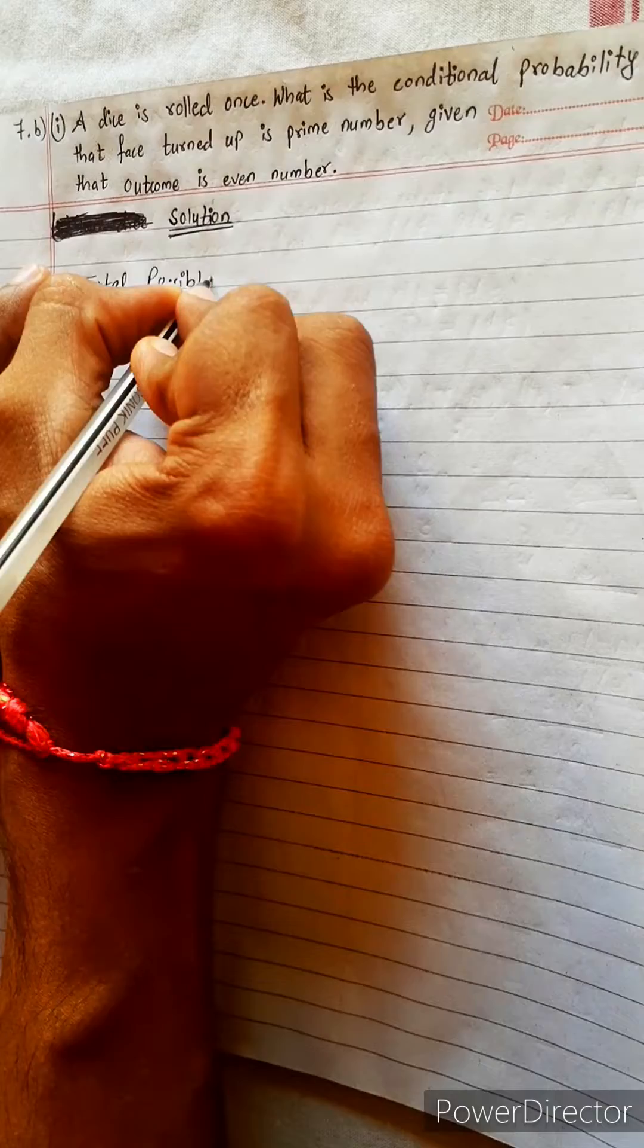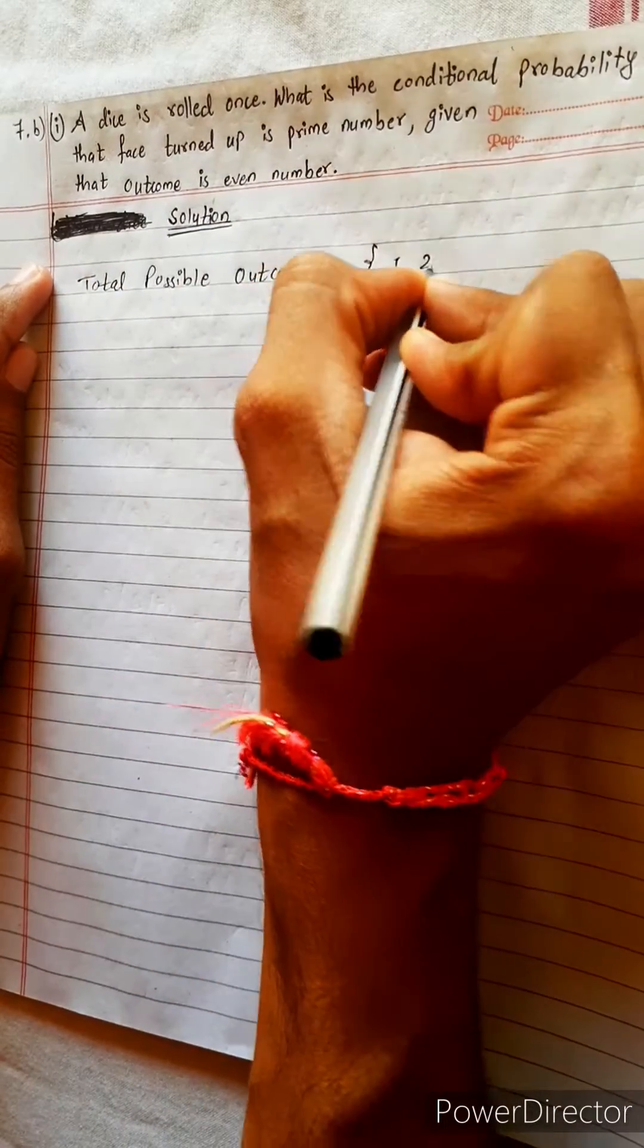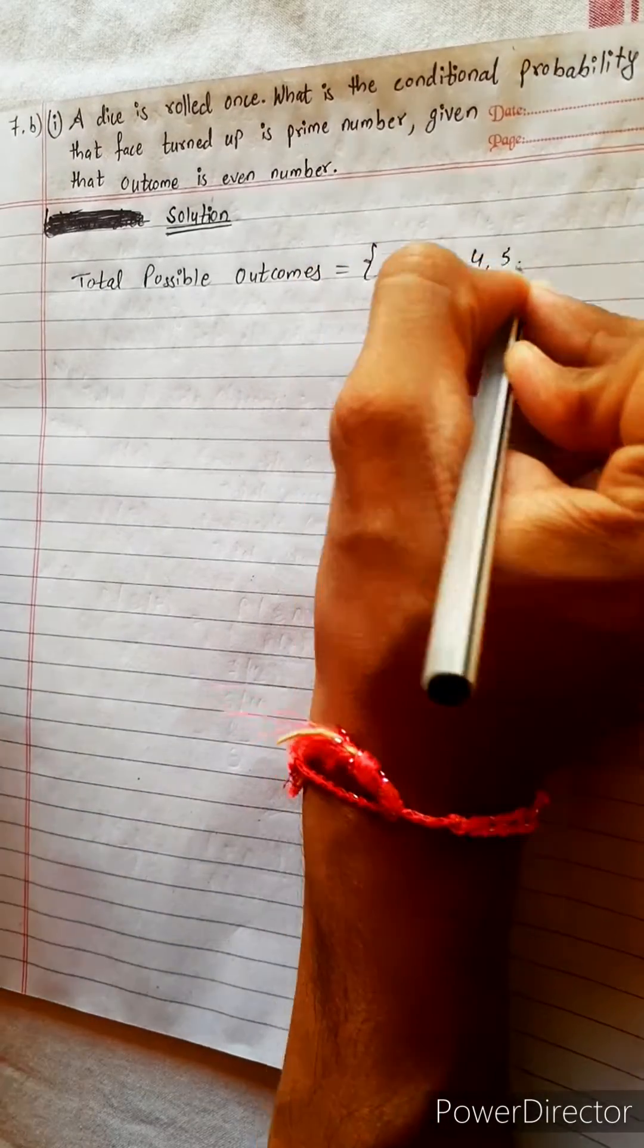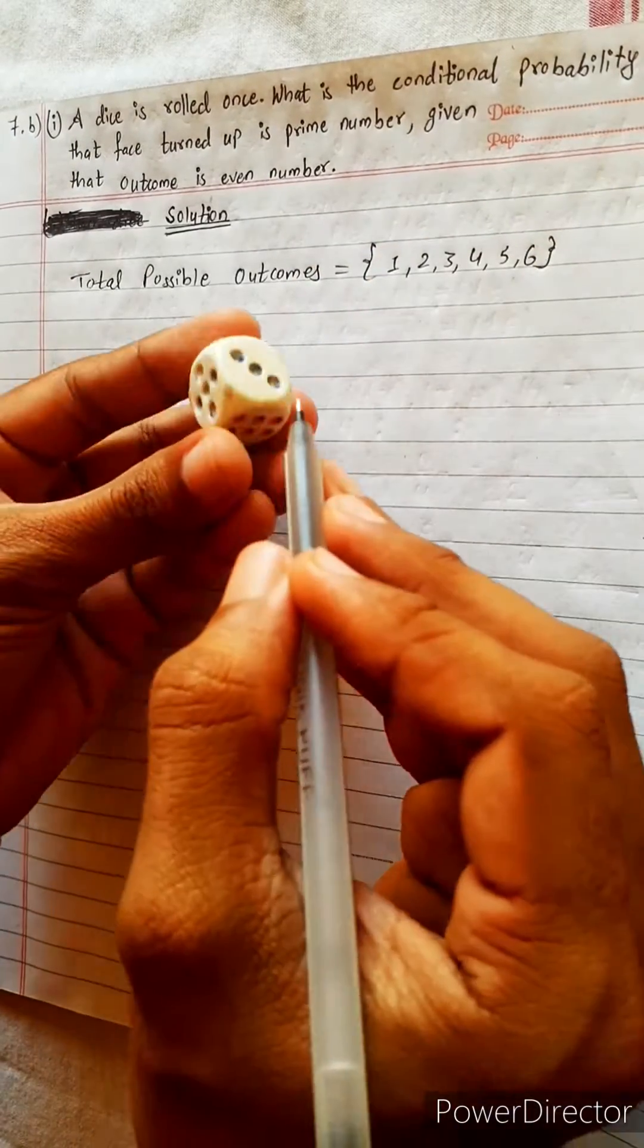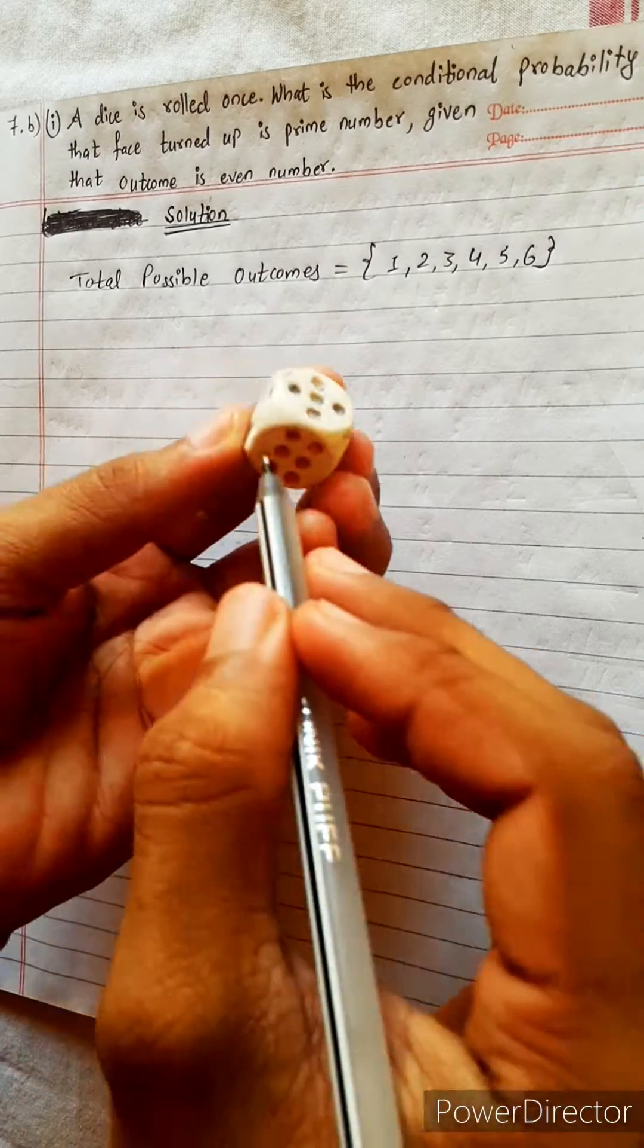Total possible outcomes: In a dice case, 1, 2, 3, 4, 5, 6. According to the question...